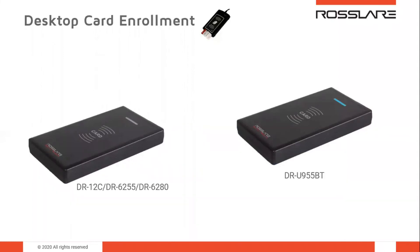The AXOX-NG system supports enrollment via desktop readers. Desktop readers are available for standard 125 kHz RFID cards, 13.56 MHz CSN smart cards, Bluetooth BLE, and UHF RFID credentials — so you don't have to manually type long card numbers. The available models are: the DR-12C (EM and TAMIC enrollment reader), the DR-6255 (13.56 MHz smart card CSN enrollment reader), the DR-6280 (Mifare Classic and Desfire EV1 enrollment reader), and the DR-U955BT (multi-technology enrollment reader for UHF RFID with Bluetooth support and 13.56 MHz smart card CSN).